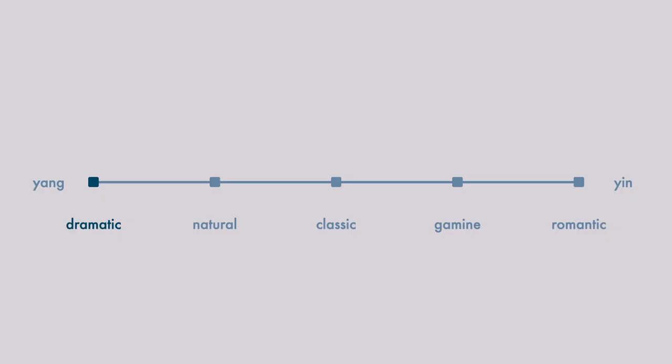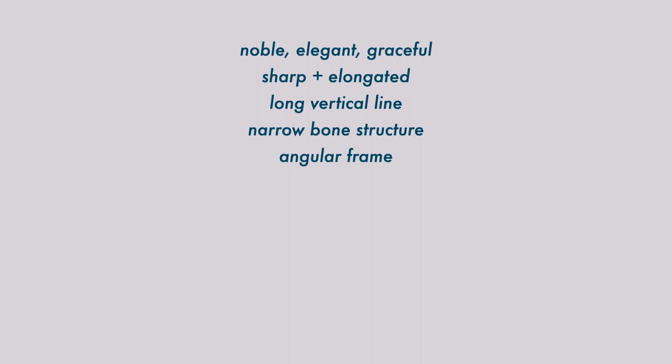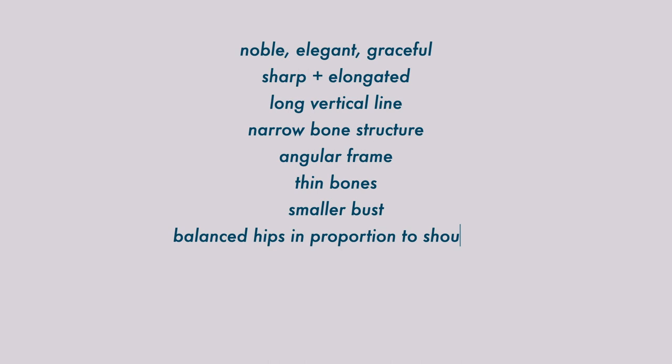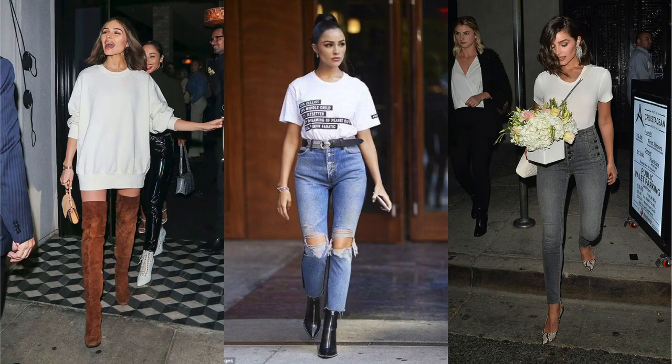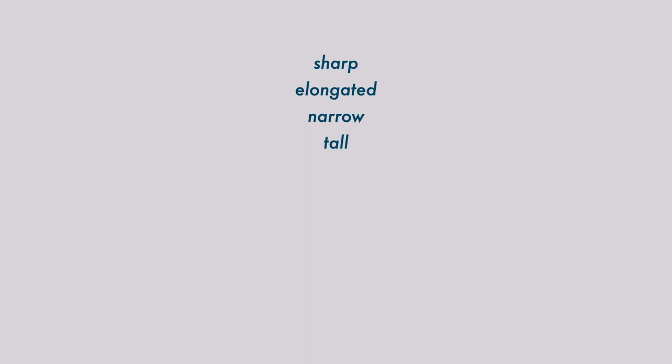All of the Kibbe body types are described primarily by their unique mix of yin or feminine traits and yang or masculine traits. The dramatic woman embodies pure yang in Kibbe's system, but that doesn't mean she isn't feminine. Her slim, elongated bone structure is noble, regal, and elegant. Her dominant descriptors are sharp and elongated. She has a long vertical line, narrow bone structure, angular frame, and thin bones. She tends to have a smaller bust, and her hips are balanced in proportion to her shoulders. She has a sharp nose and jaw, clearly defined cheekbones, and often narrow eyes and lips. Some great examples of dramatic women are Maggie Smith, Olivia Culpo, and Leah Cabeta. Keywords for the dramatic include sharp, elongated, narrow, tall, angular, noble, graceful, geometric, tailored, and defined.